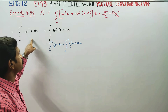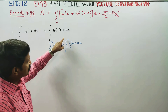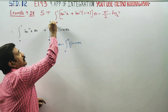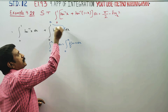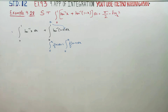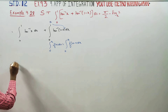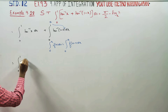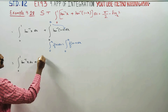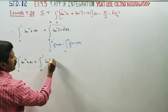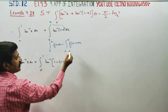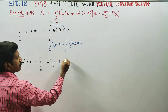For our sum, 0 to a of f(x) dx equals 0 to a of f(a minus x) dx. Here, a is 1, so x becomes 1 minus x. We will use 1 minus x. So, the first integration 0 to 1 of tan inverse of x dx, by this property, becomes 0 to 1 of tan inverse of (1 minus x) dx, where x becomes a minus x.